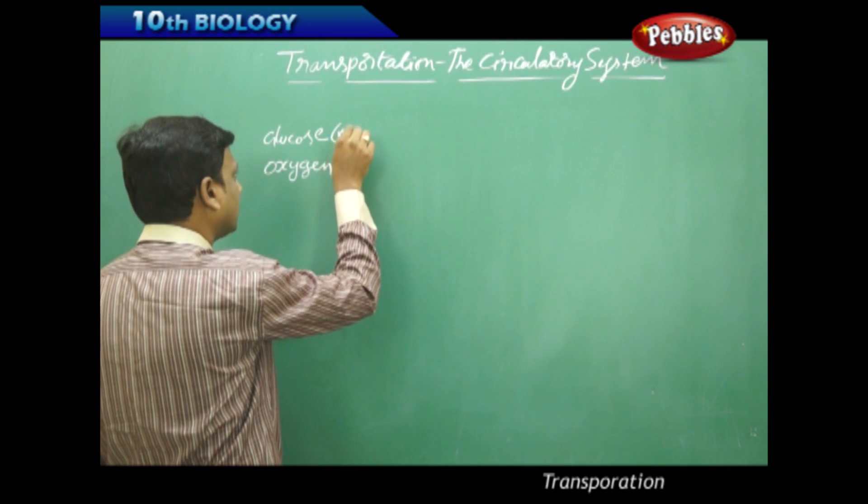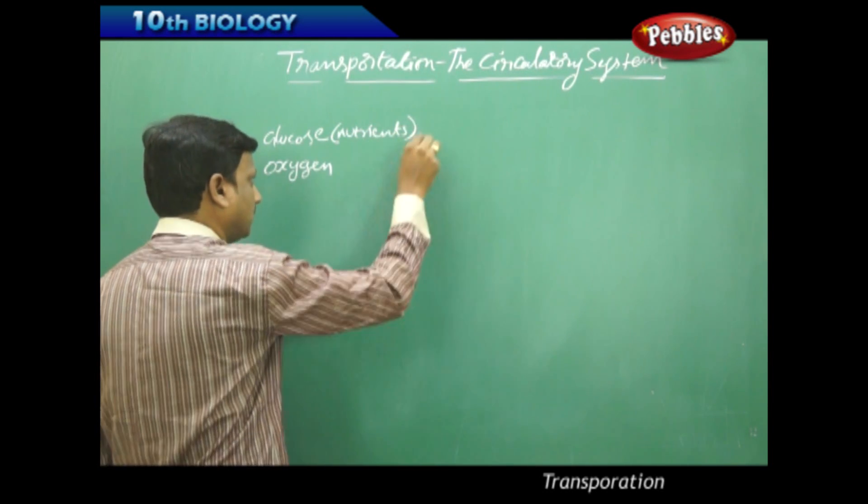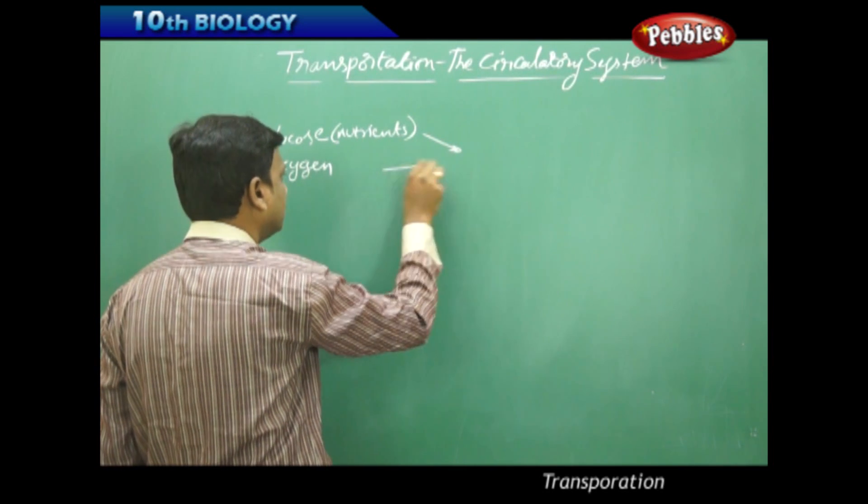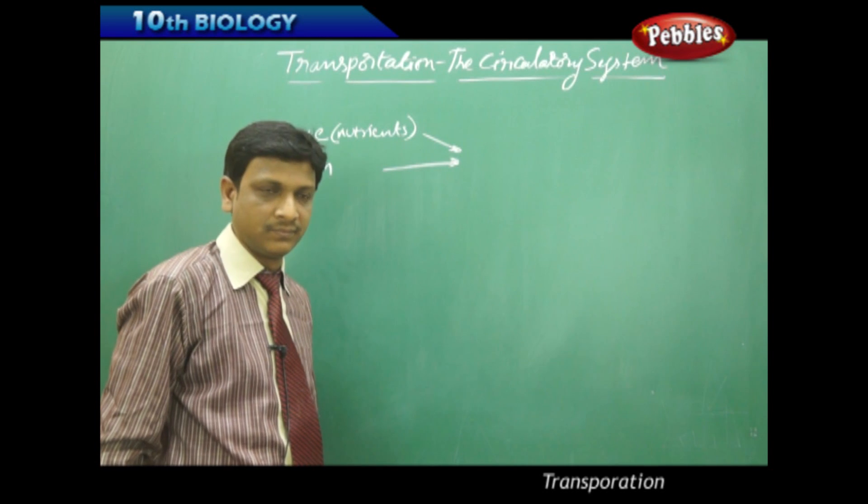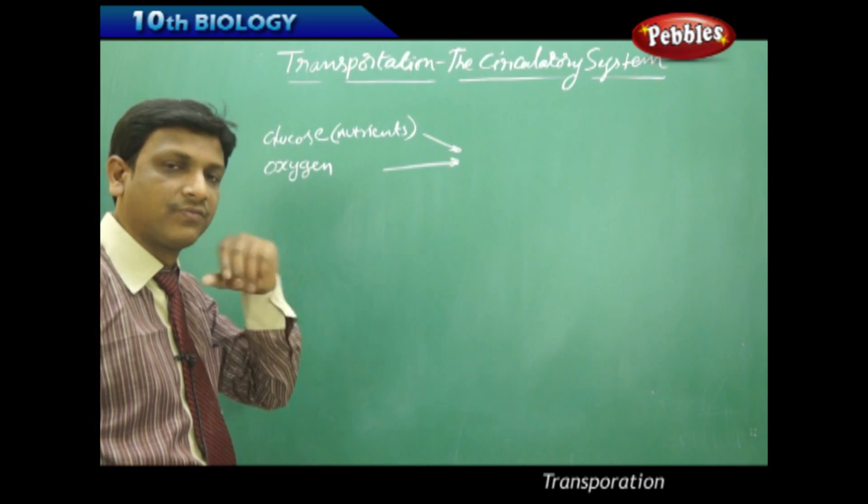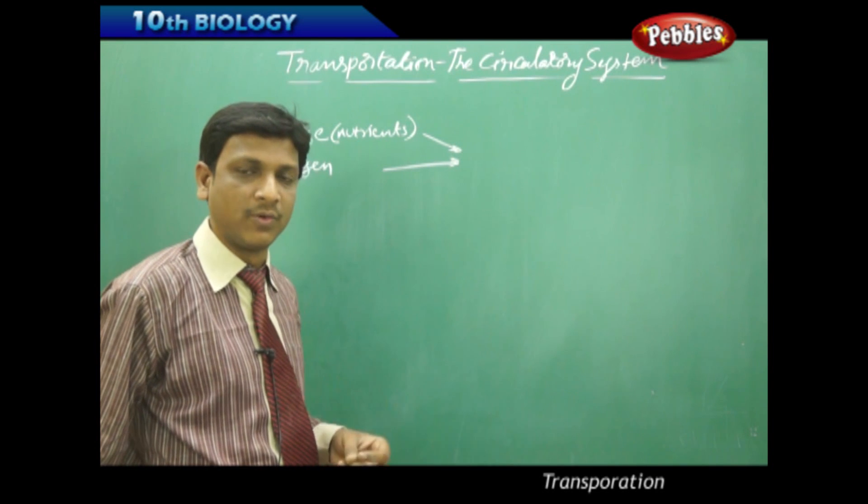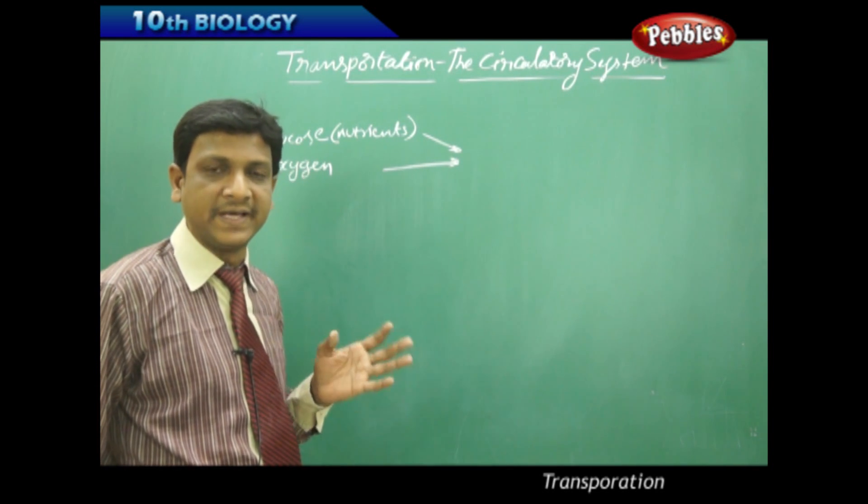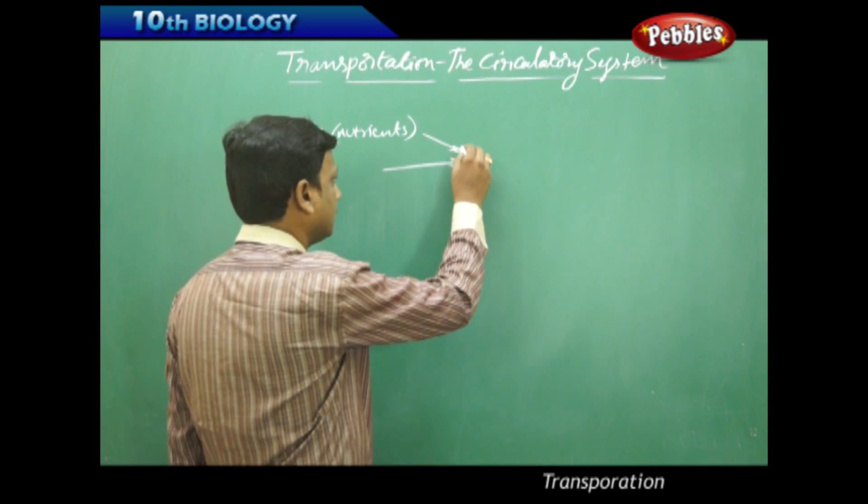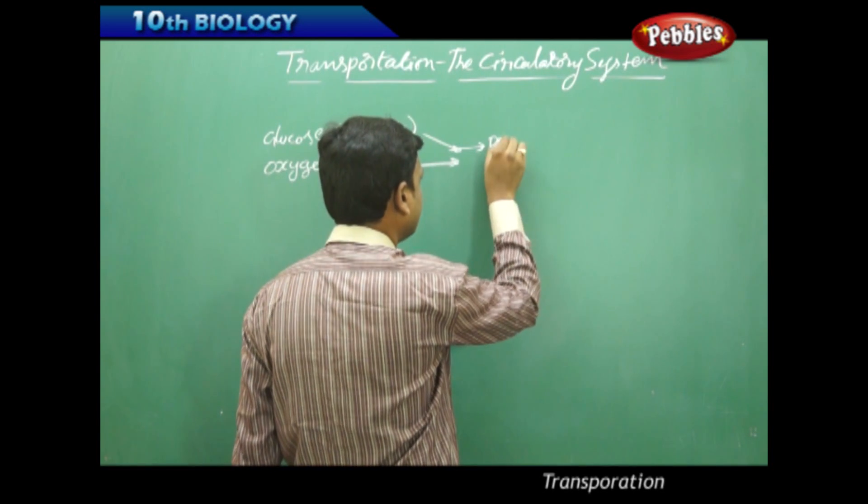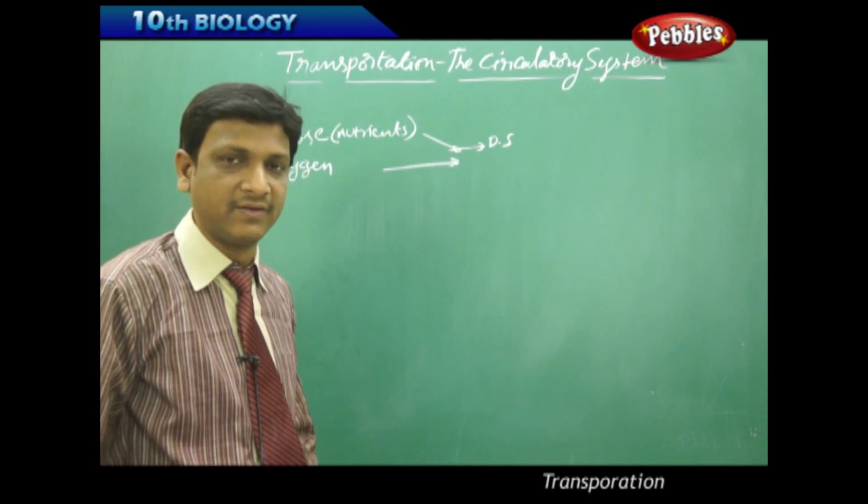Glucose and other nutrients. Basically, these two things are to be supplied. We are getting the nutrients from the plants or animals and we have taken them into our body by eating, chewing, digesting. Where are the nutrients available? The nutrients are available in the digestive system, in the intestine.